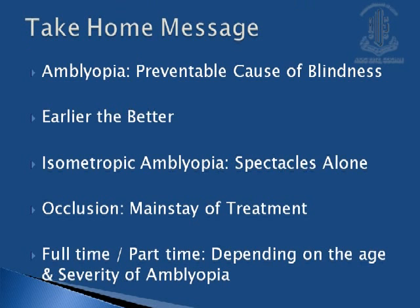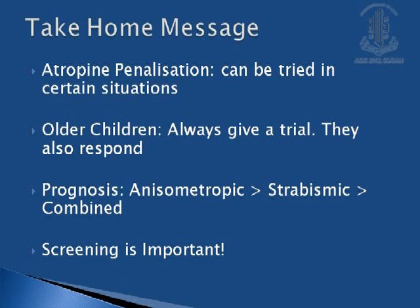The take-home messages: amblyopia is a preventable cause of blindness. The earlier the detection and intervention, the better the prognosis. Isometropic amblyopia can be treated with spectacles alone. Occlusion is still the mainstay of treatment — full-time or part-time, decided depending on age and severity. Atropine penalization can be tried in certain situations. Do not give up even in older children, as they also respond to occlusion therapy. Anisometropic amblyopia has the best prognosis compared to strabismic and combined amblyopia. Screening is always important.